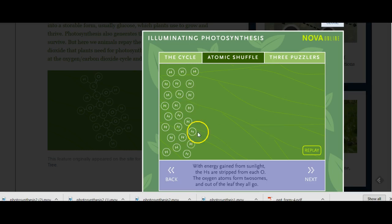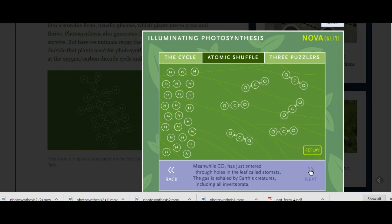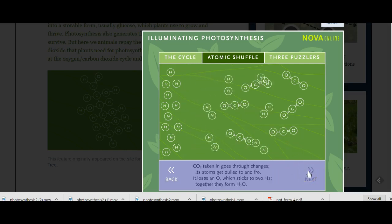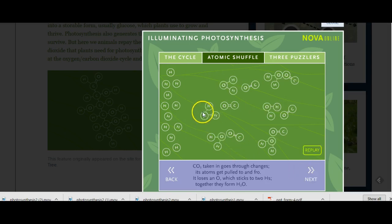That's how we get our oxygen. And then all these leftover hydrogens, some of the hydrogens strip away one of the oxygens from the CO2, the carbon dioxide. And that forms water. The plant will use it, or if it doesn't need it, it will release it back into the atmosphere.